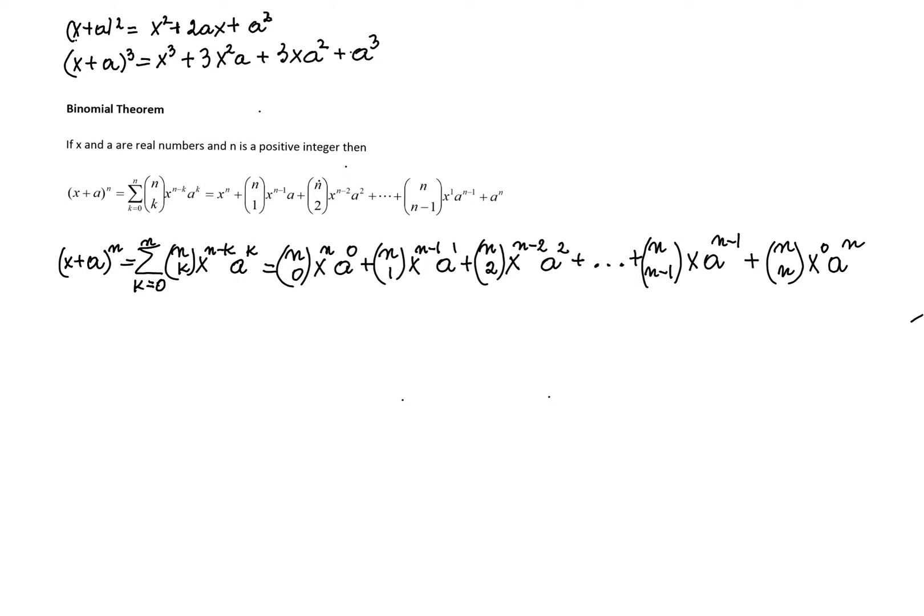Early in algebra we learn that x plus a squared is x squared plus 2ax plus a squared. And then we learn that if we want to cube the binomial x plus a, we'll have to take x cubed, add to that 3x squared a, add to that 3xa squared, and add to that a cubed.